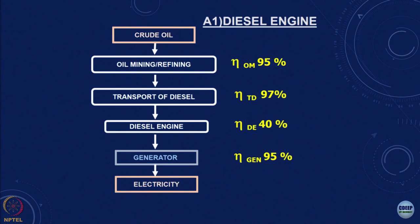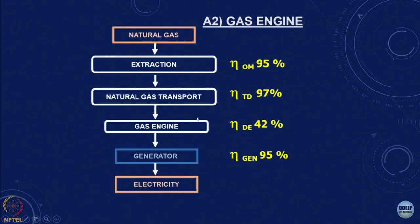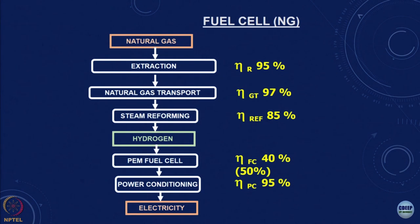For power generation from diesel, we trace the chain: generator, diesel engine, transport of diesel, oil mining and refining — similar to the pump example. For natural gas, the chain is: generator, gas engine, natural gas transport, natural gas extraction. For fuel cell hydrogen from natural gas, we add steam methane reforming — the reaction CH4 + 2H2O → 4H2 + CO2 — before the PEM fuel cell, which has efficiencies of 40 to 50 percent.